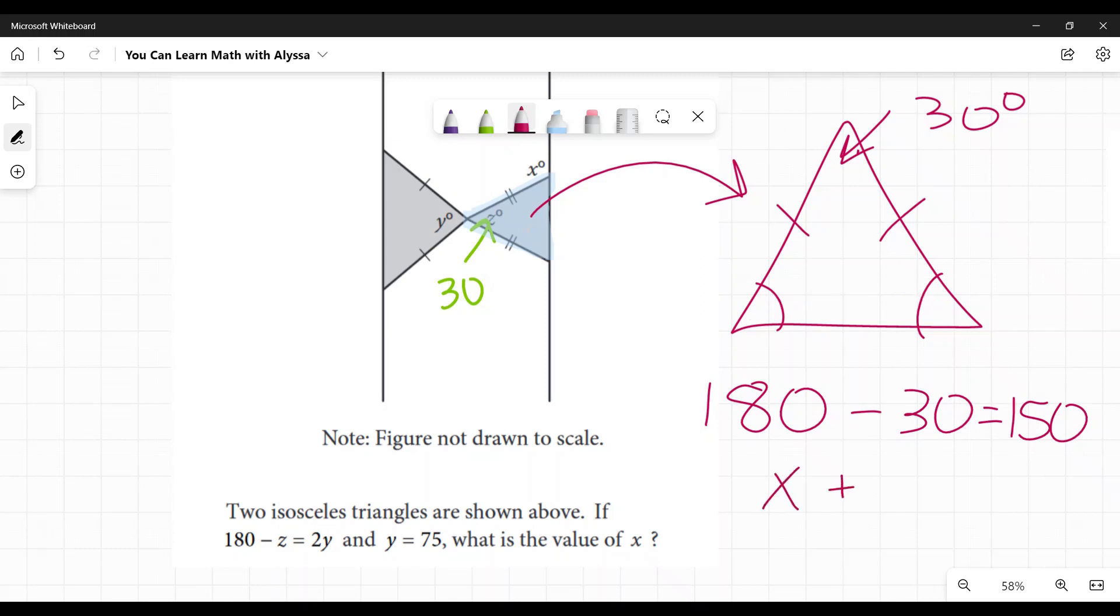So you could say that as like x plus x equals, and actually, let's not use x because we already have an x there. I don't want to do that. Let's call it a. So I have a plus a equals 150. I have two a's. So 150 is going to be divided by two. It's 75. So each of these is 75 degrees.